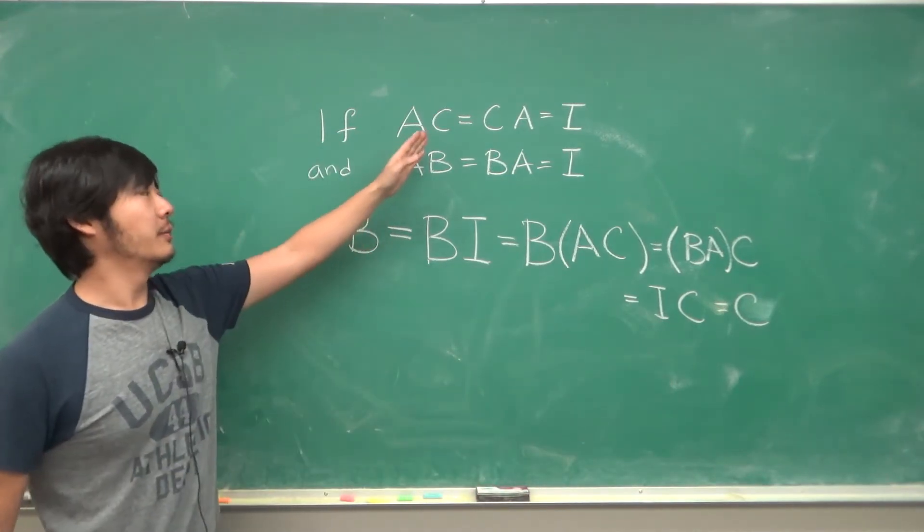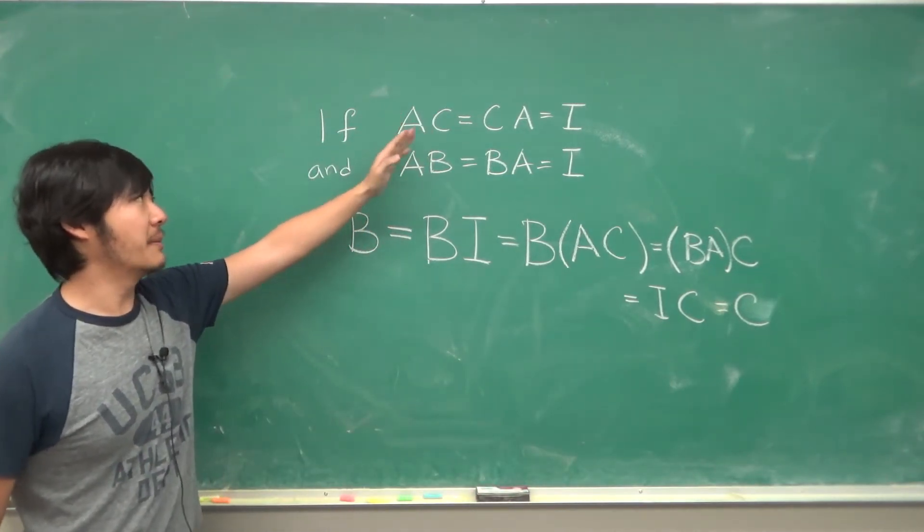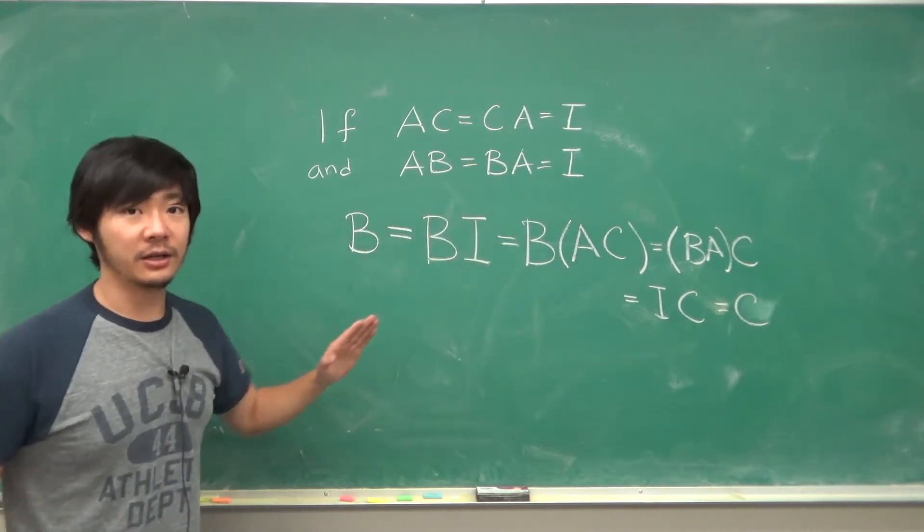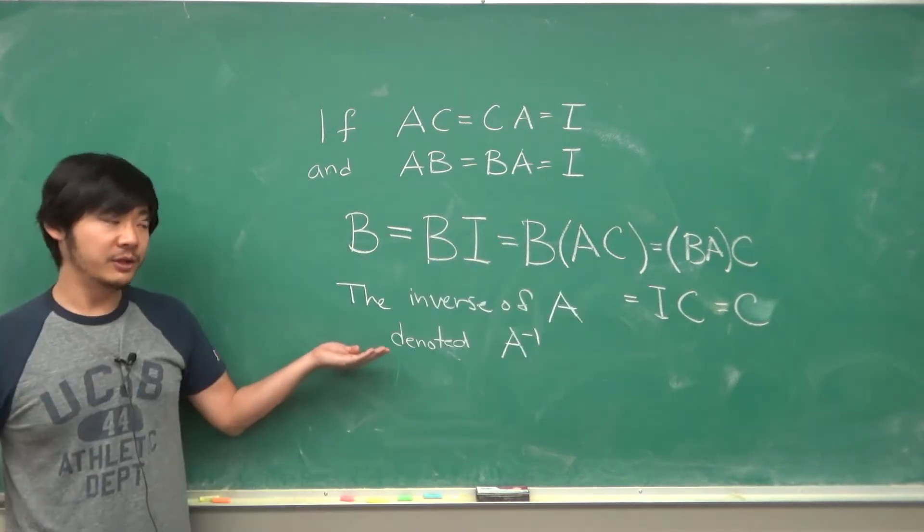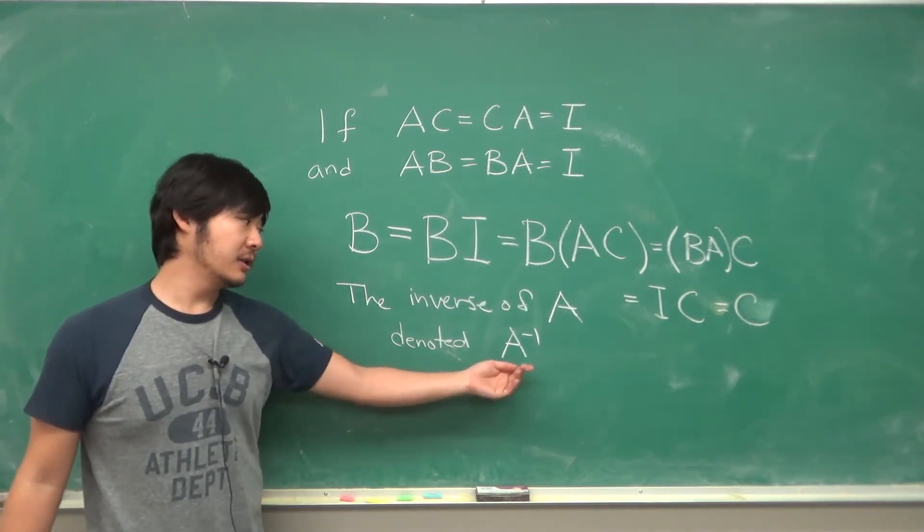So this matrix where if you multiply by A and you get the identity is unique. So we call that the inverse and we denote it as A to the negative 1.